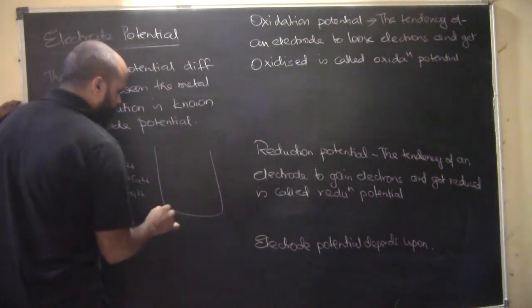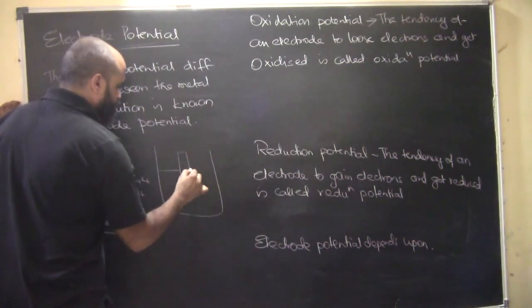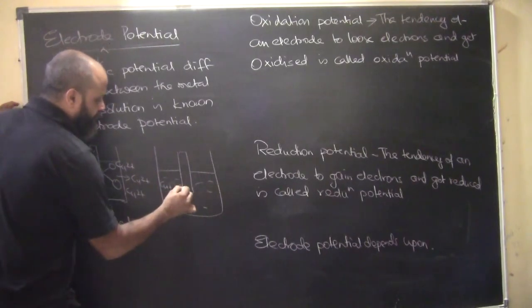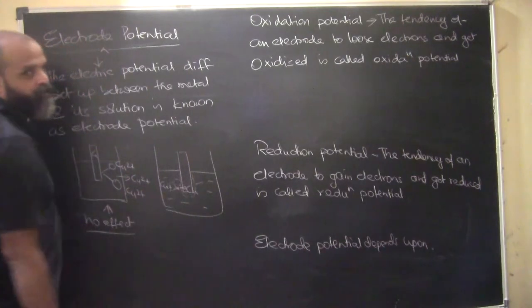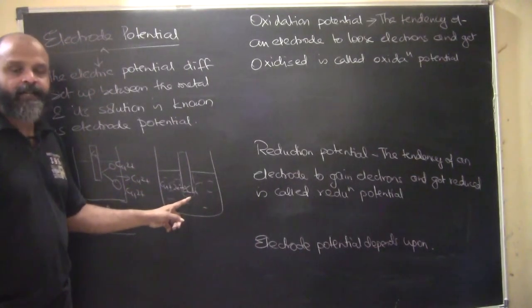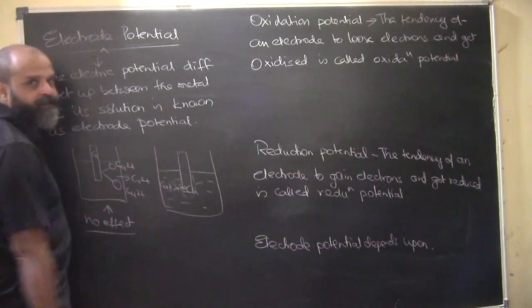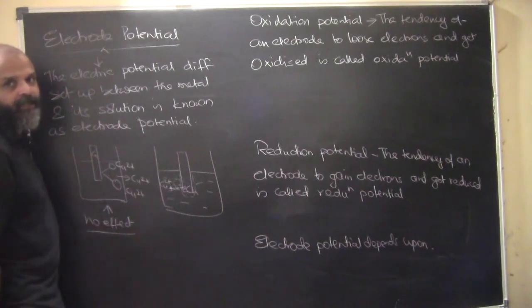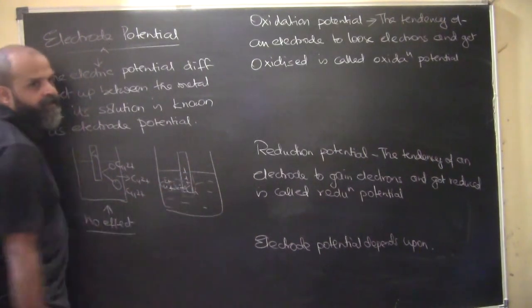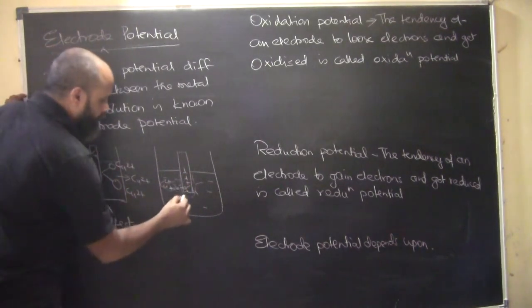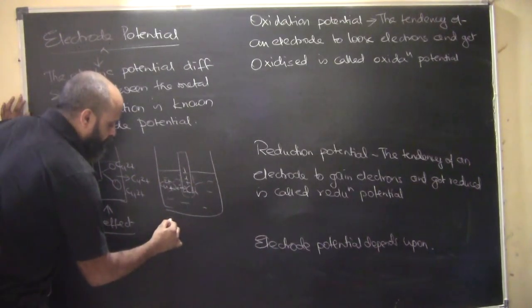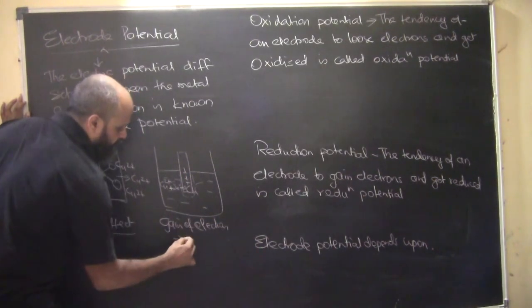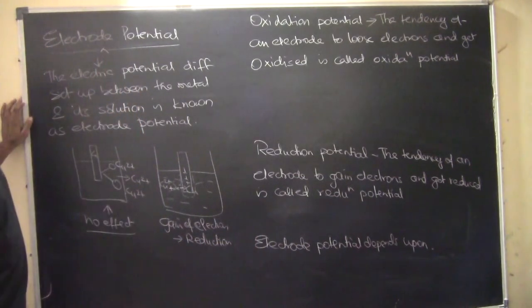Now we have the other situation: copper ions gain electrons and get converted — deposited — as copper. So copper ions are gaining electrons and getting deposited as copper. They are gaining these electrons from the electrode. Due to loss of electrons by the electrode, it will acquire a certain positive charge. When gain of electrons happens — gain of electrons by the metal ions — this is basically a process of reduction.